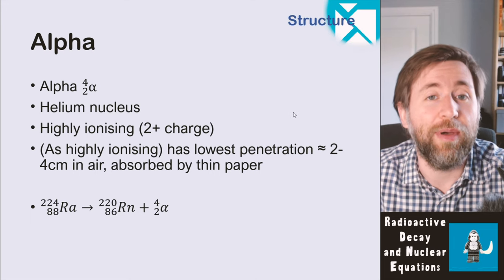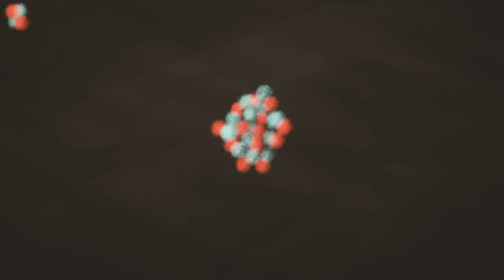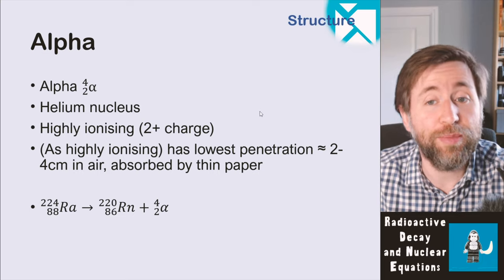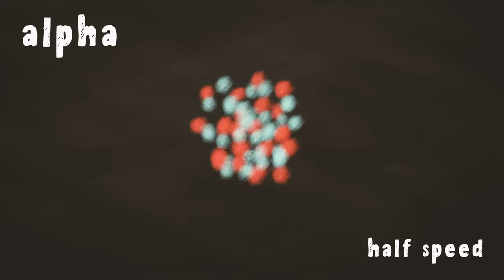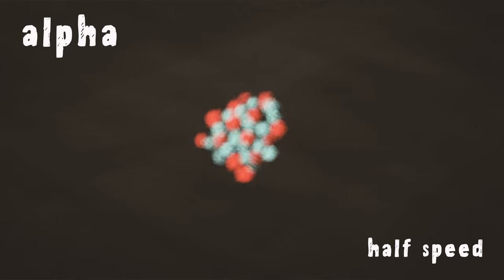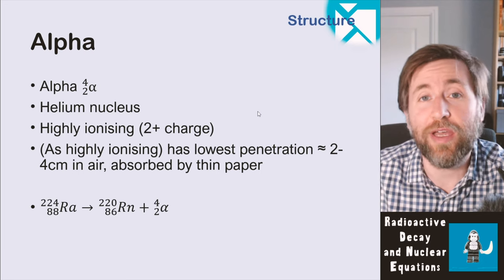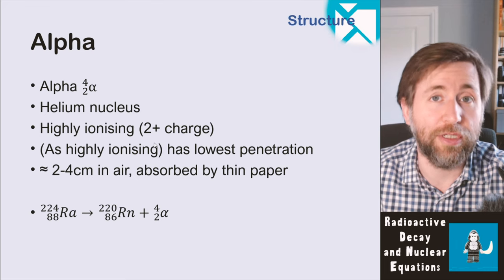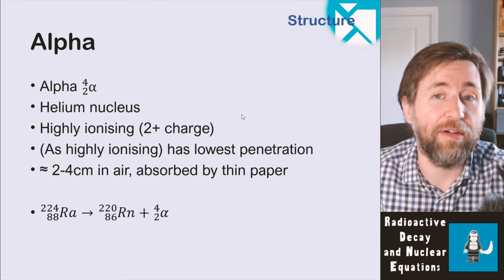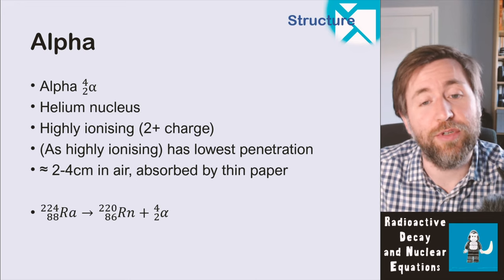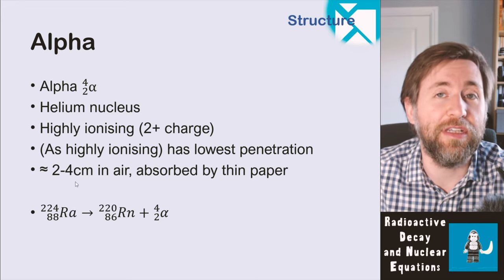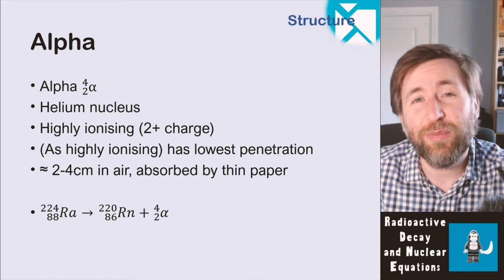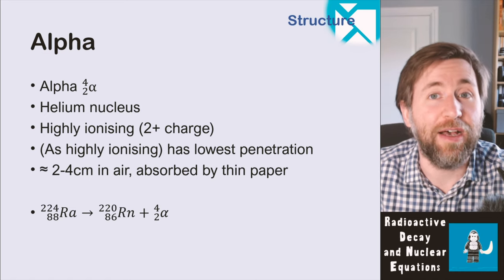An alpha particle is a helium nucleus — two protons and two neutrons. It's very highly ionizing as it has a two-plus charge. Because it's made of two protons and has no electrons, it can ionize atoms very easily, attracting electrons from other atoms and leaving them ionized. Because it's highly ionizing — and importantly, not because of its size, that's a commonly made error — it has low penetration power. It can go about two to four centimeters in air and would be absorbed by thin paper. It wouldn't get through the layer of dead skin cells on your skin.